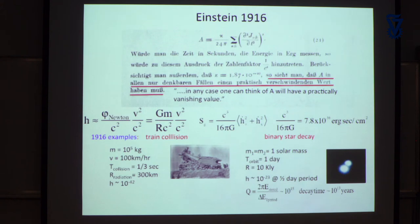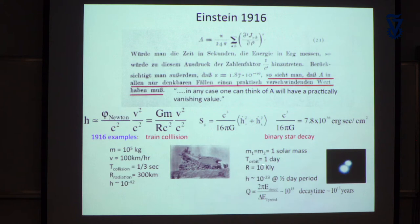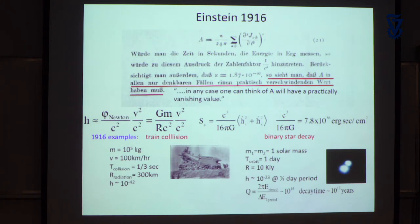That immediately tells you you're not going to do a Hertz experiment. Einstein must have known. He might also have tried double star systems — he already knew about those. Taking a solar-mass double star system with its velocities, assuming a day period and maybe 10 kilolight-years distance, you put it into this formula.